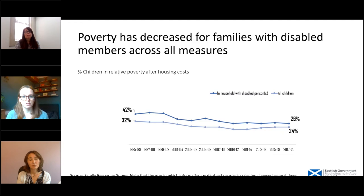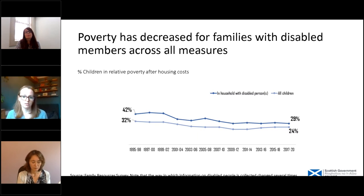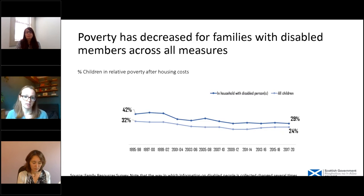This graph shows poverty rates over the last 25 years. The top line represents families where there's someone who's disabled, and the bottom line is for all children. Currently 24% of all children in Scotland are living in relative poverty, and for children in families where someone's disabled, that's 29%. Over the last 25 years, the rates have declined somewhat for both groups, but over the last 10 years they've stayed broadly stable.